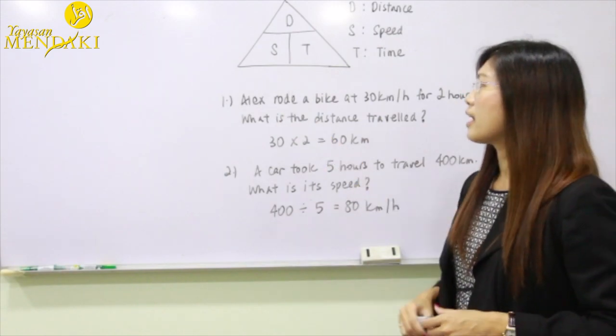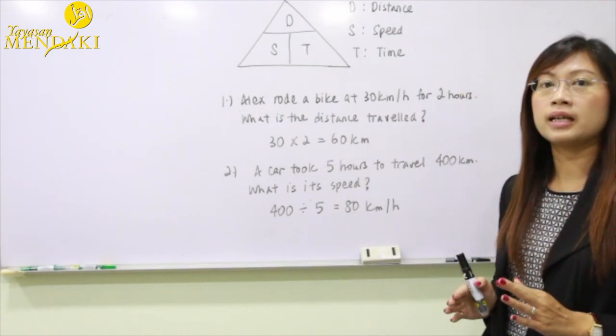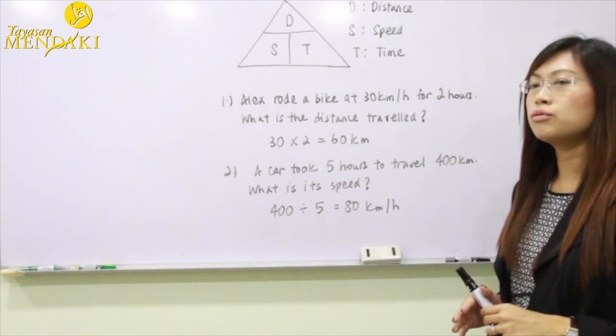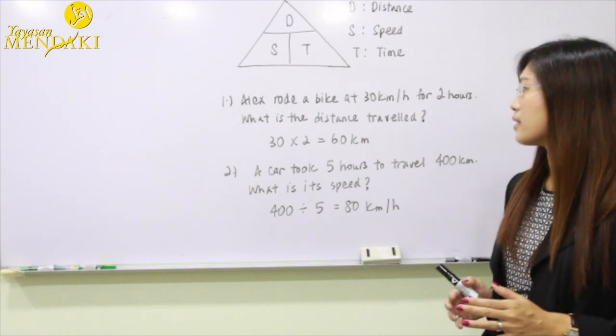The first question: Alex rode a bike at 30 km per hour for two hours. What is the distance traveled?